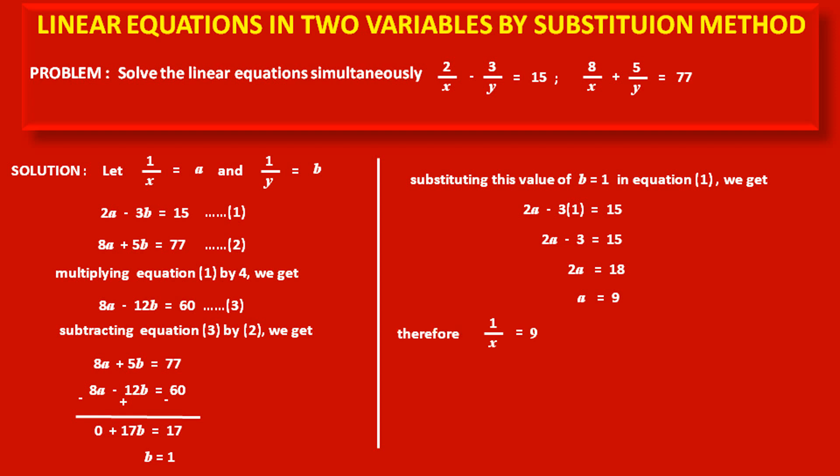According to our assumption, 1/x = a = 9 and 1/y = b = 1. Taking reciprocals, we get x = 1/9 and y = 1.